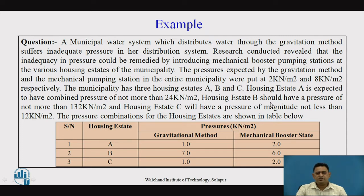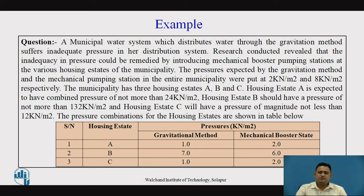Housing station B should have the pressure of not more than 130 kN per meter square. And housing station C will have the pressure of not less than 12 kN per meter square. These are the limitations defined for housing stations A, B, and C regarding the pressure — these are the minimum pressure limitations defined to get the proper supply of water. This table gives the overall picture of the pressure by the gravitational method and the mechanical booster stations for each housing station A, B, and C.